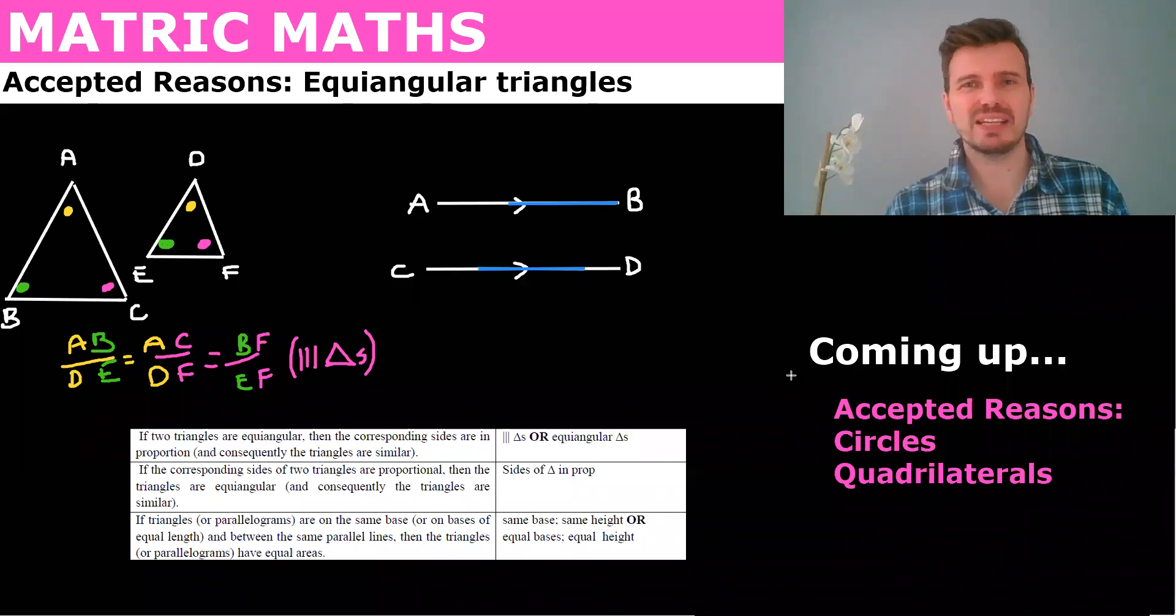Hello Matrix and welcome again. Today what we're going to be doing is finishing off our accepted reasons for triangles. So I want to look at equiangular triangles to begin with. We did a video proving that if triangles are equiangular, their sides are in proportion.